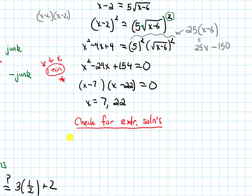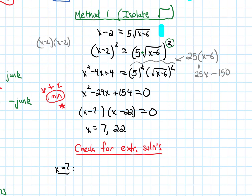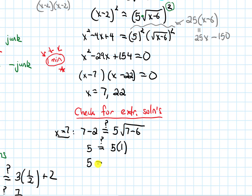Let's take x equals 7 and plug it in. I can plug it in at any step before I got rid of the root — so either the original or the step x minus 2 equals 5 times root x minus 6. I'll use that second step since it looks simpler. Plugging in 7: the left-hand side is 7 minus 2, which is 5. The right-hand side is 5 times the square root of 1, which is 5. Both sides are 5, so x equals 7 checks out.